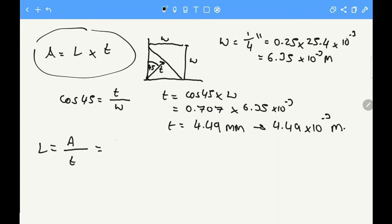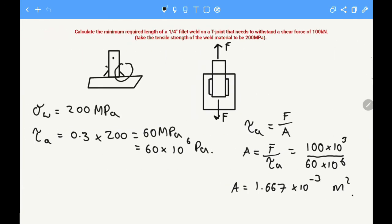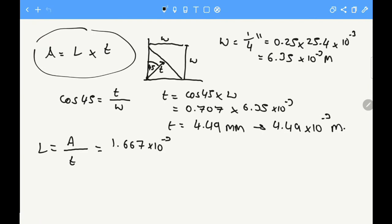The area we worked out on the other side is 1.667 times 10 to the minus 3, and that's all divided by the throat thickness which we've just worked out is 4.49 times 10 to the minus 3.